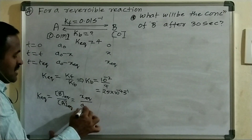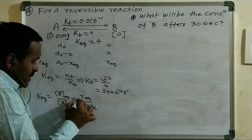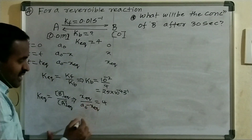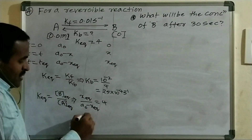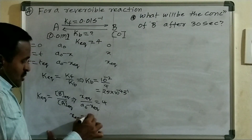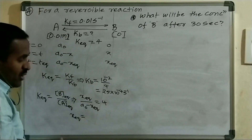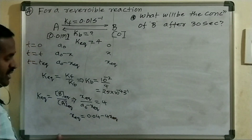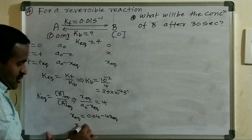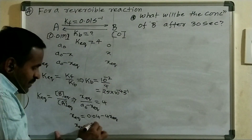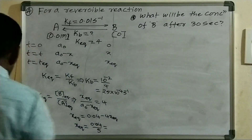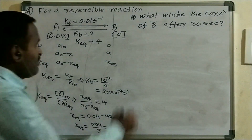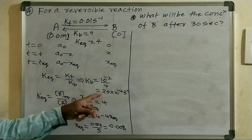With A0 = 0.01 M: X_eq / (0.01 − X_eq) = 4, giving 0.01 × 4 = 0.04 = X_eq + 4X_eq = 5X_eq. So X_eq = 0.04/5 = 0.008 M.